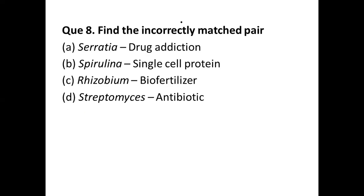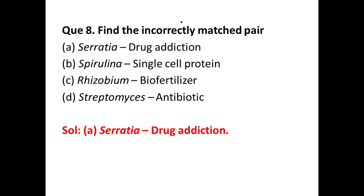Question number eight: find the incorrectly matched pair. Options are: (a) Serratia – drug addiction, (b) Spirulina – single cell protein, (c) Rhizobium – biofertilizer, (d) Streptomyces – antibiotic. The correct answer is option (a) Serratia – drug addiction. Serratia marcescens is a gram-negative bacterium often considered an indicator of poor sanitization and hygiene practices.